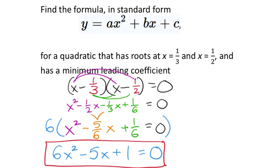The assignment wants a minimum leading coefficient. If you ended up with 12x squared minus 10x plus 2 equals zero, you can factor out a 2 and divide both sides by it to simplify back to 6x squared minus 5x plus 1 equals zero. Whenever you can factor something out from all three terms, you should, to get the simplified form.